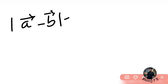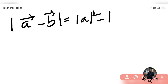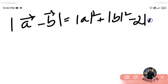We compute |a - b|² using the expansion formula: a² + b² - 2·a·b·cos(theta), which gives a vector squared plus b vector squared minus 2 times a vector dot b vector times cos(theta).